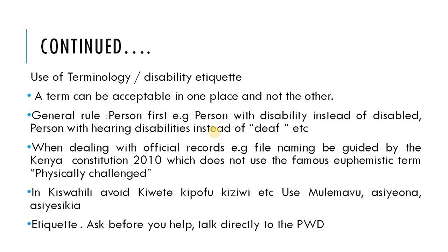When it comes to etiquette, kindly ask before you help. Many people would like to assist, but before you help a person with disabilities, kindly ask what kind of help they want. Also, ensure that you are talking to the person with disabilities directly. Quite often, persons with disabilities will have guides, and when a person with visual disabilities comes for service with a guide, do not talk to the guide — put your question directly to the person with disabilities.